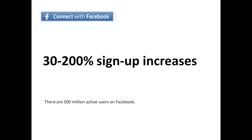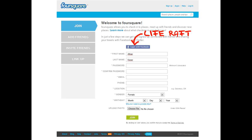One major feature that I would recommend is allowing signup using Facebook. The feature has been shown to increase signups by 30 to 200% on major websites and is easy to implement. Keep in mind that there are a lot of people with Facebook accounts online — just around 500 million. Here's an example of how Foursquare implements it on their signup page: just in case you're scared off by the long form, they threw out a life raft in the form of a Facebook login.